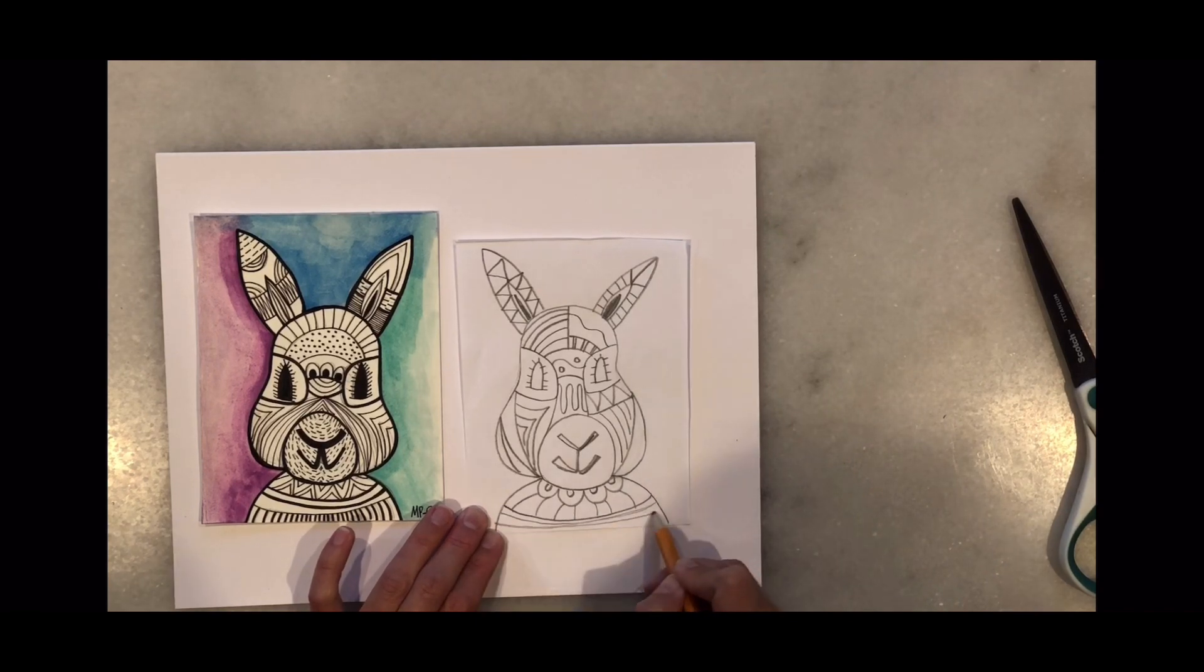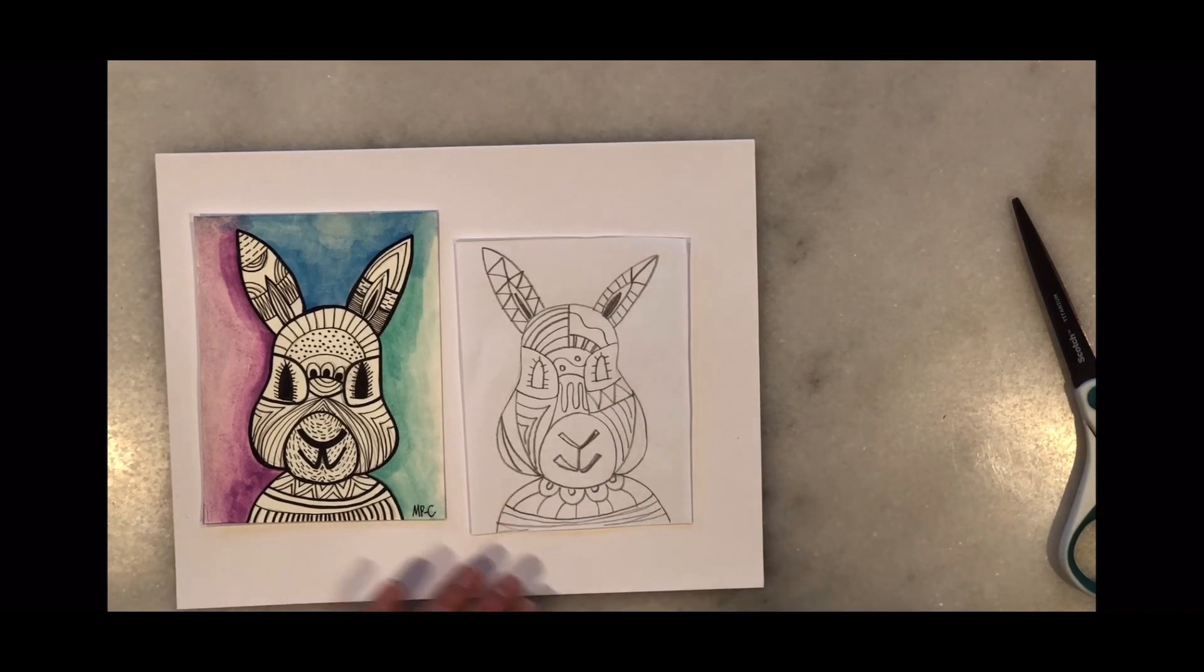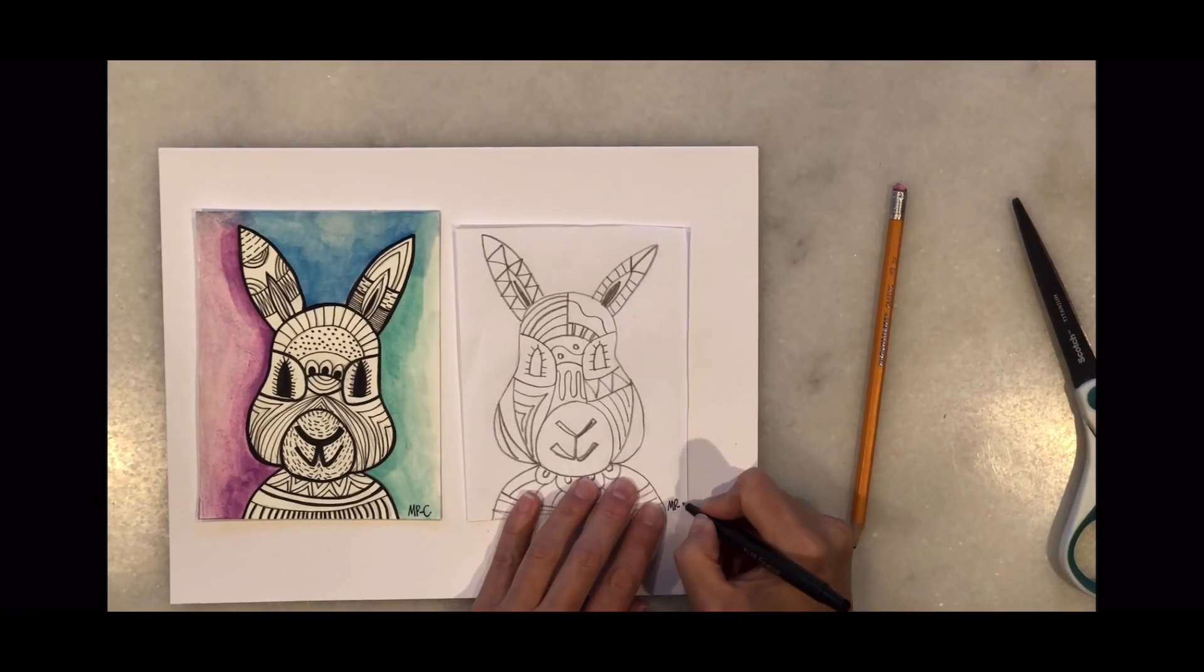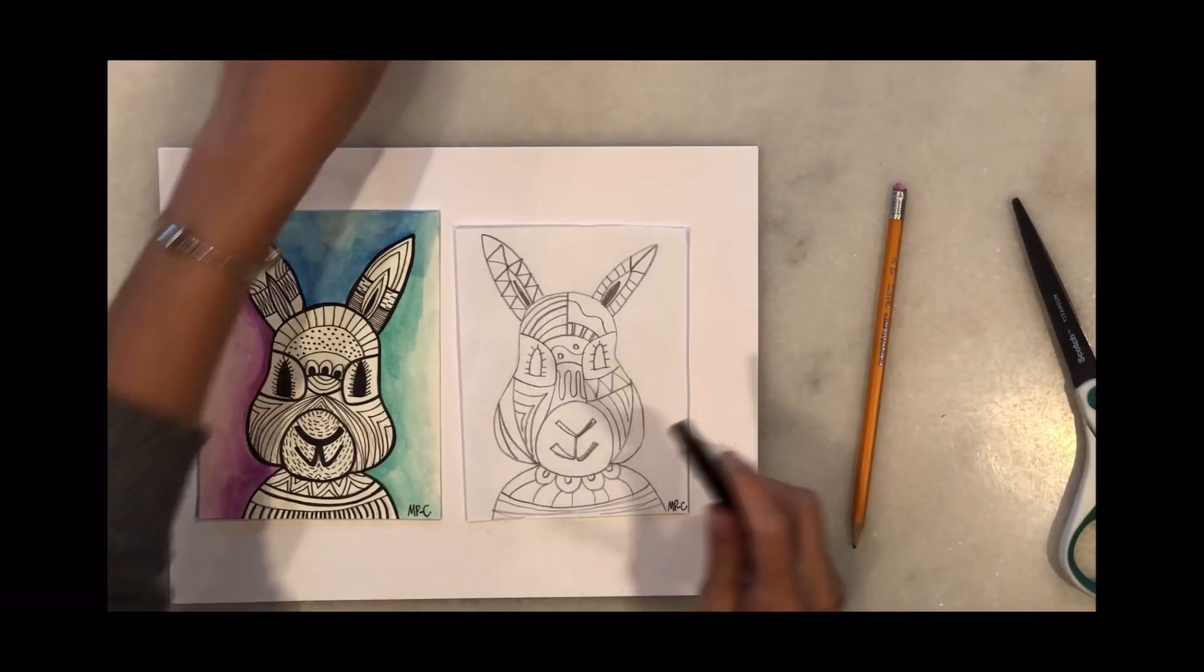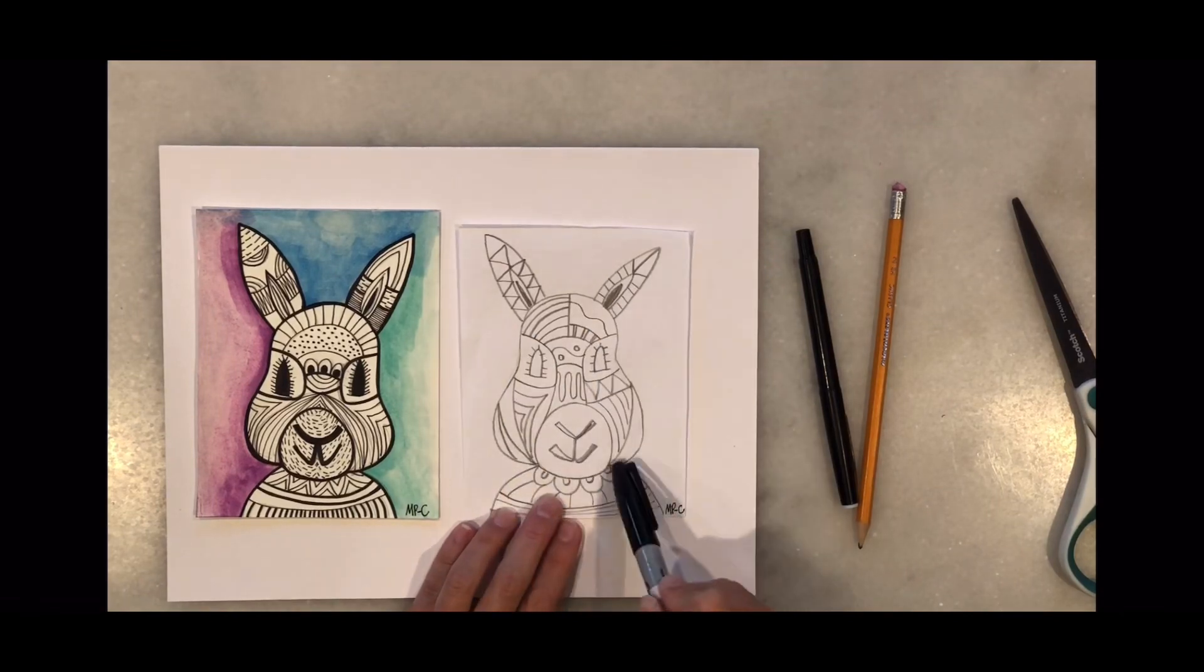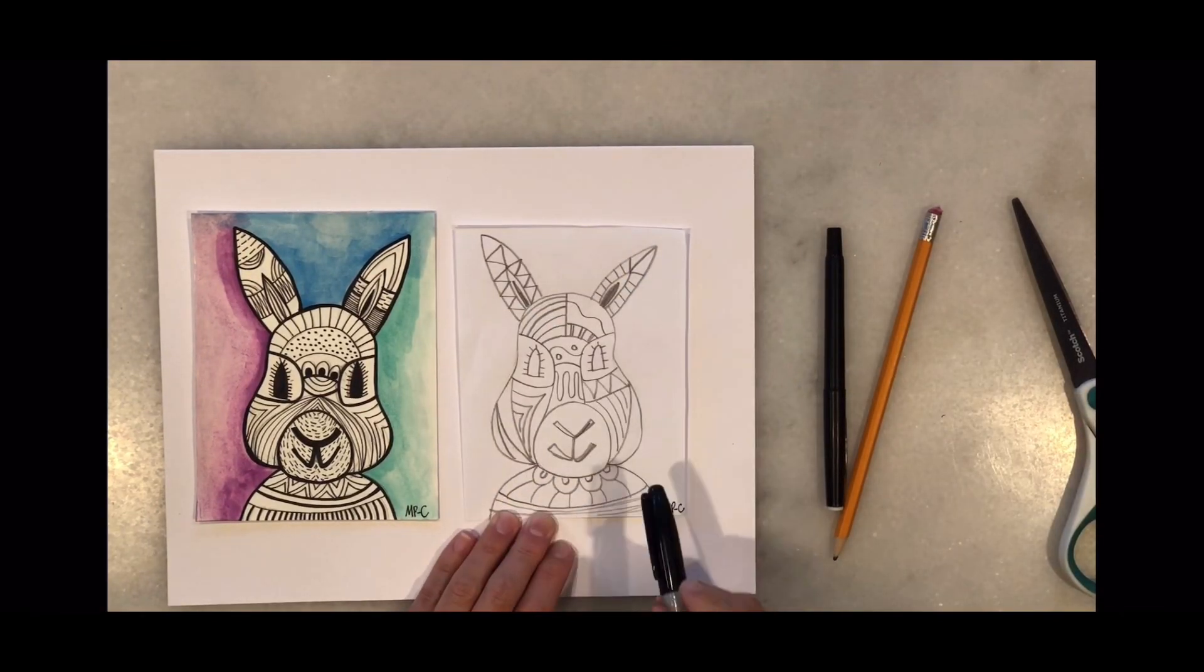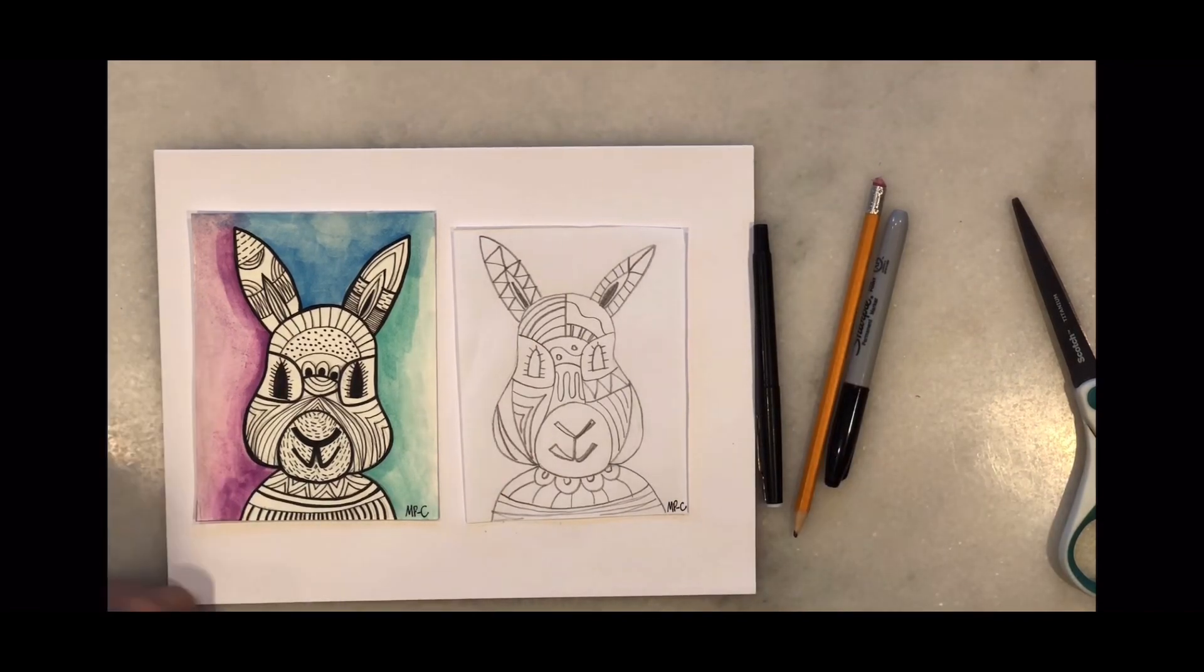Once you finish adding all the details to your bunny, you're going to color the background and then trace all the lines using a sharpie or a black pen. You can use a thin sharpie or a thick sharpie to add variety and don't forget to sign your name at the bottom of your work.